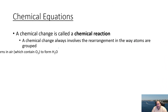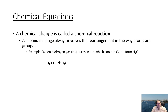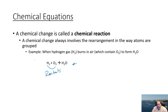So a chemical change is called a chemical reaction, and one way we represent it is with a chemical equation. For example, when hydrogen gas burns in air — which contains oxygen — to form water, this is an equation. To the left-hand side of the arrow are our reactants, and to the right-hand side are our products.